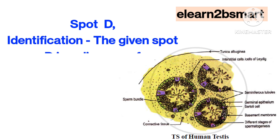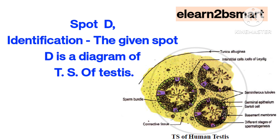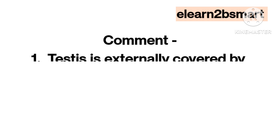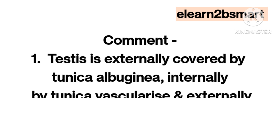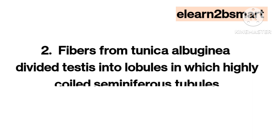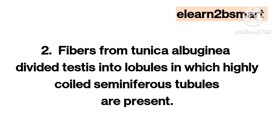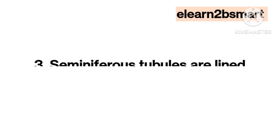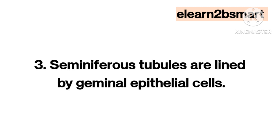Spot D. Identification: The given spot D is a diagram of T.S. of testis. Comment 1: The testis is externally covered by tunica albuginea, internally by tunica vascularis, and externally by incomplete tunica vaginalis. Fibers from the tunica albuginea divide the testis into lobules, in which highly coiled seminiferous tubules are present. Seminiferous tubules are lined by germinal epithelial cells.